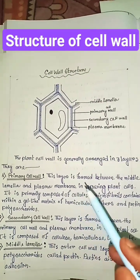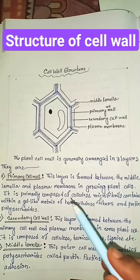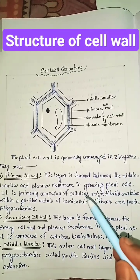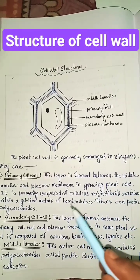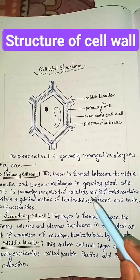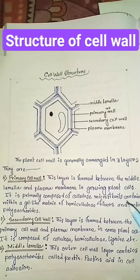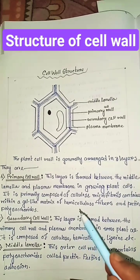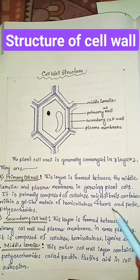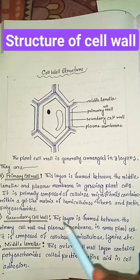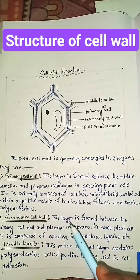Primary cell wall is formed between the middle lamella and plasma membrane in growing plant cells. It is primarily composed of cellulose microfibrils contained within a gel-like matrix of hemicellulose fibers and pectin polysaccharides.